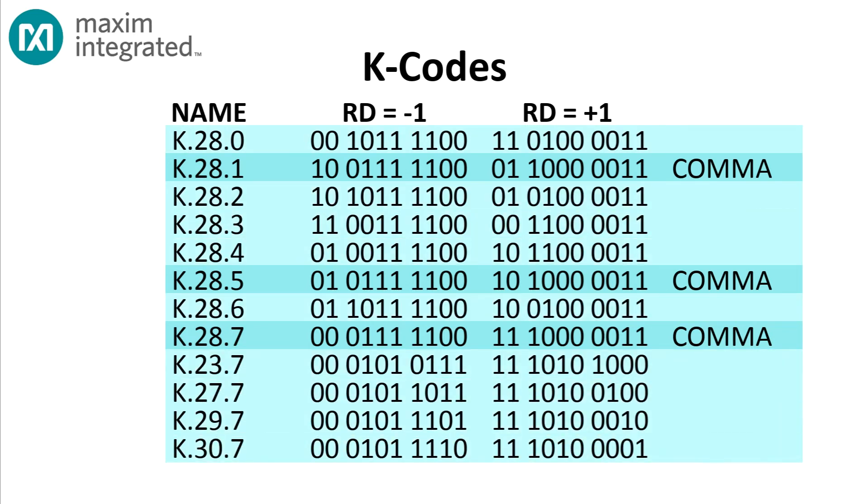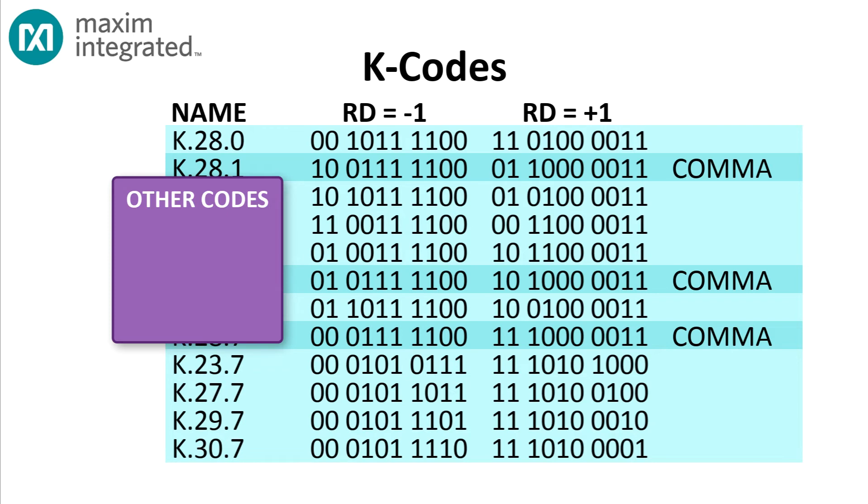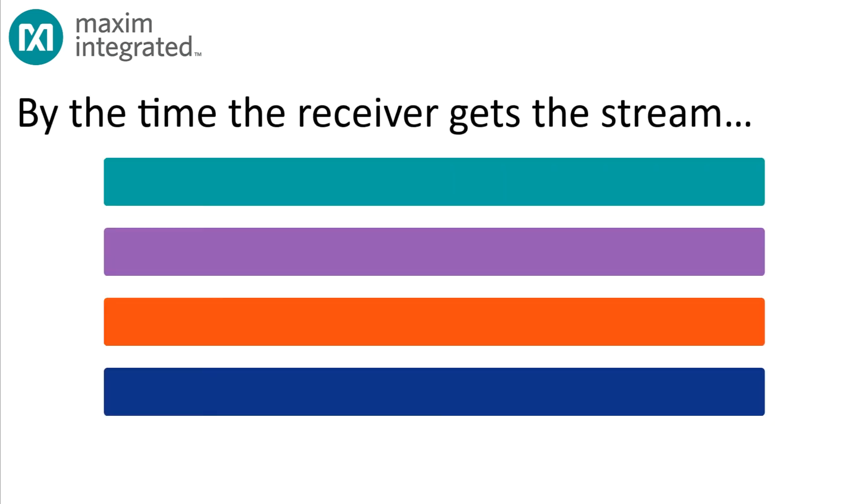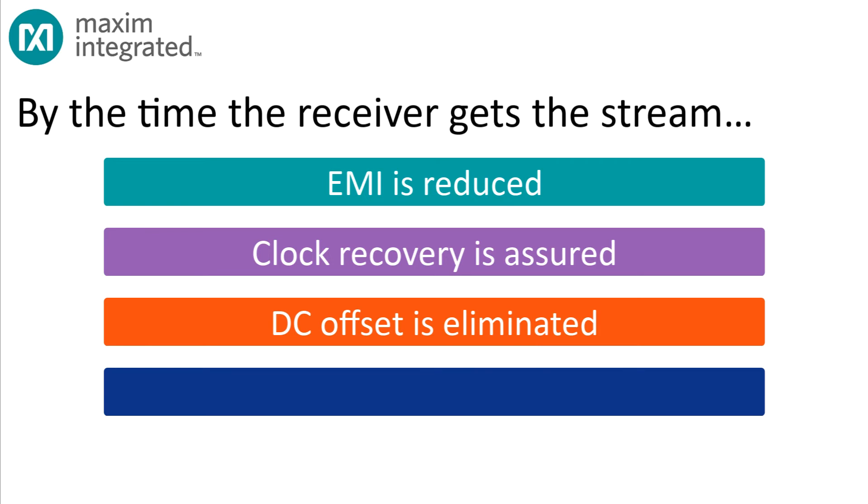Other k-codes can be used for any other purpose, and in different systems that use 8B-10B encoding, they serve many different functions. In GMSL, they're used for error detection and framing of fields within the bit stream. The point is that by the time the receiver gets the stream, it's been processed in such a way that EMI is reduced, clock recovery is assured, DC offset is eliminated, and the stream can be properly decoded.